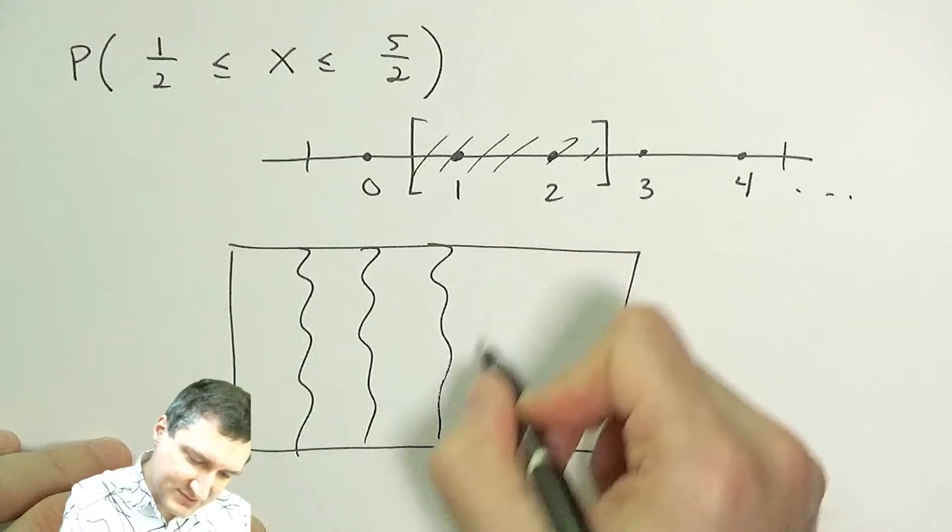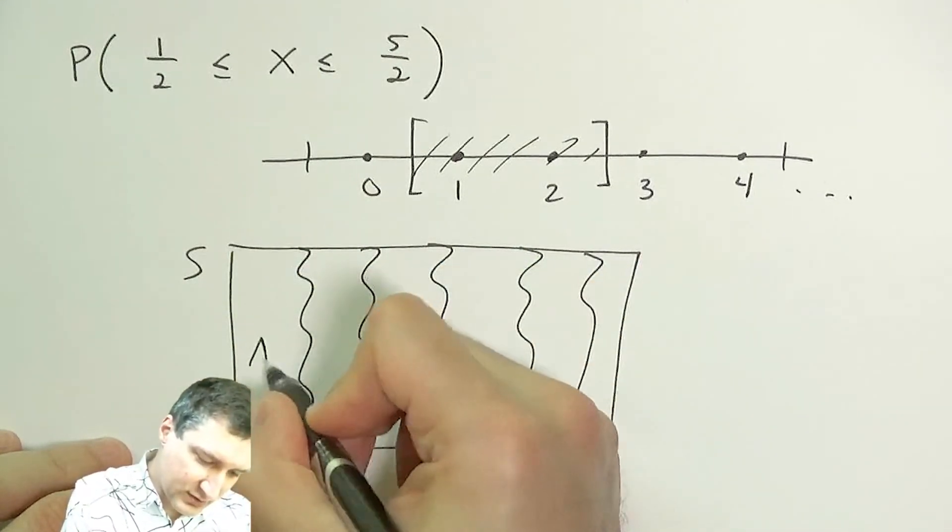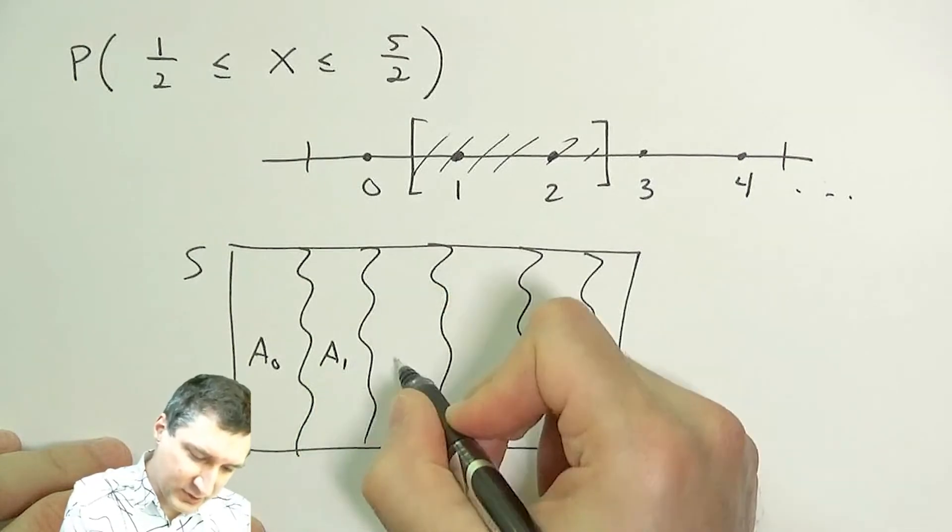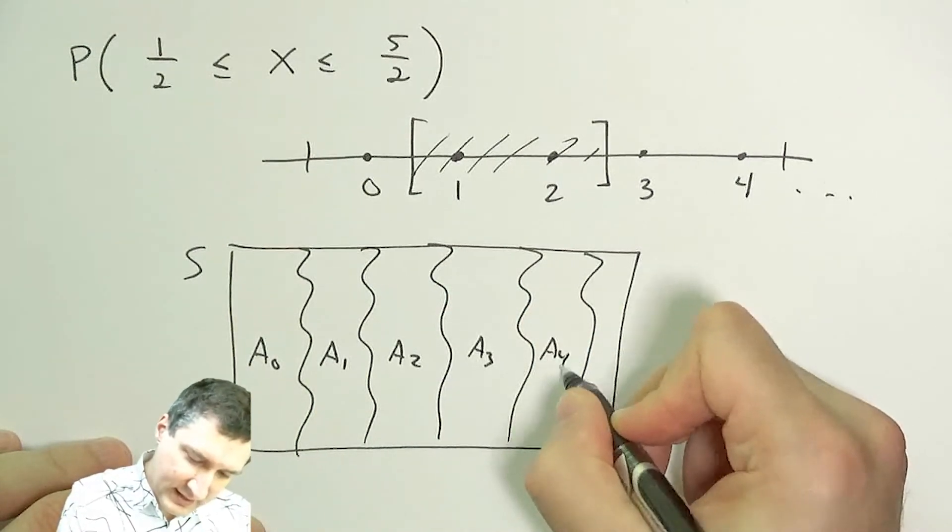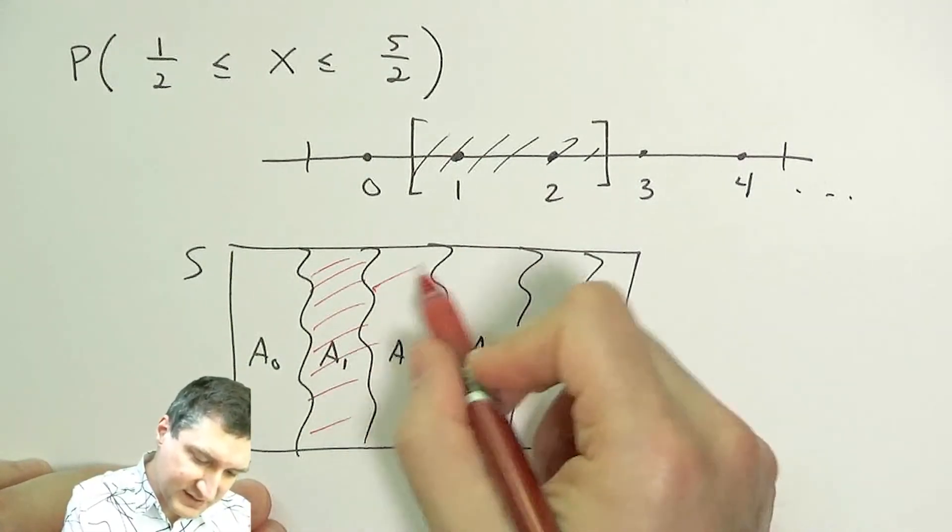Now I go and I map back and I say, okay, this is my original sample space. These were all the values that map to 0, these were all the values that map to 1, and so on. And what I really care about is now the probability of these underlying events.